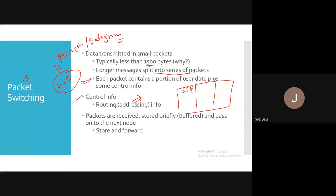In that table you maintain the entry: what is the source IP, what is the destination IP, and that is your router or the next hop. You are maintaining this information. Packets are issued, stored briefly — buffered — and passed on to the next node.